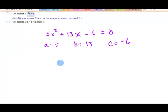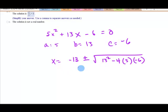All right. So x equals negative 13 plus or minus square root of 13 squared minus 4 times 5 times negative 6, all over 2 times 5.